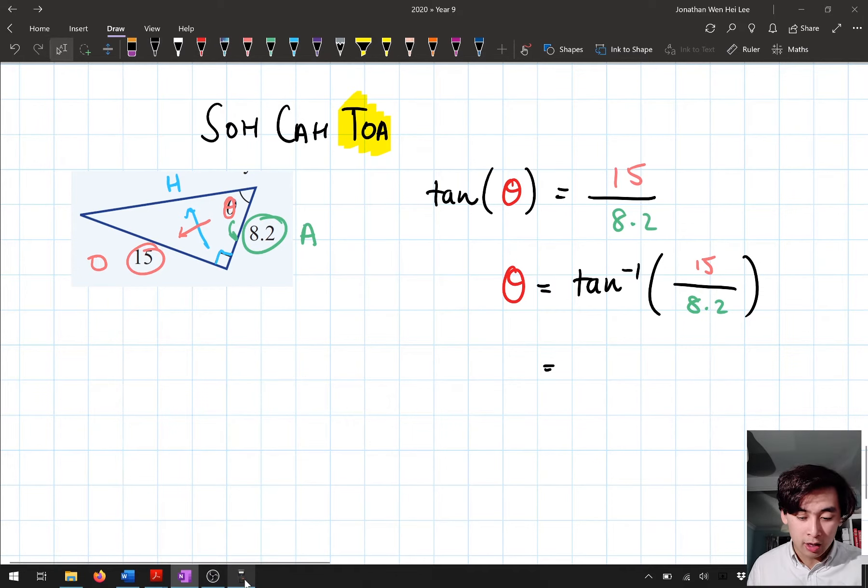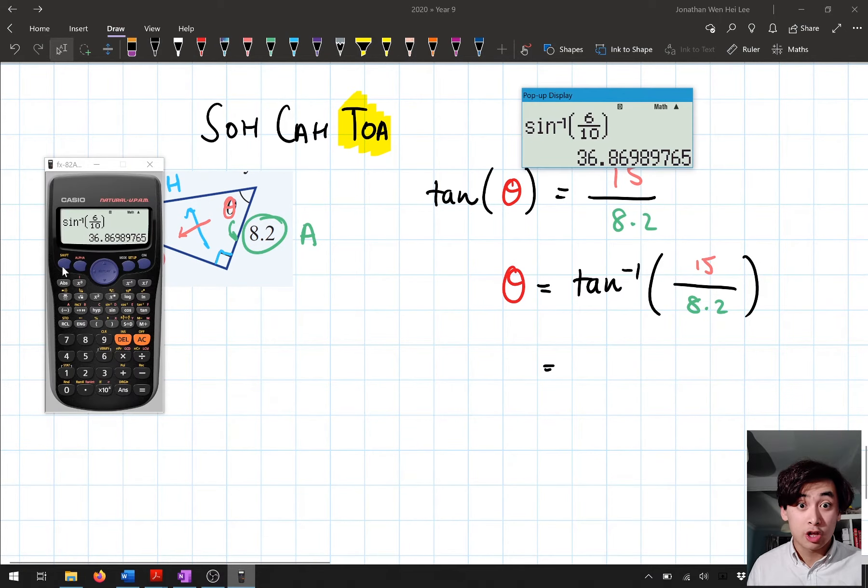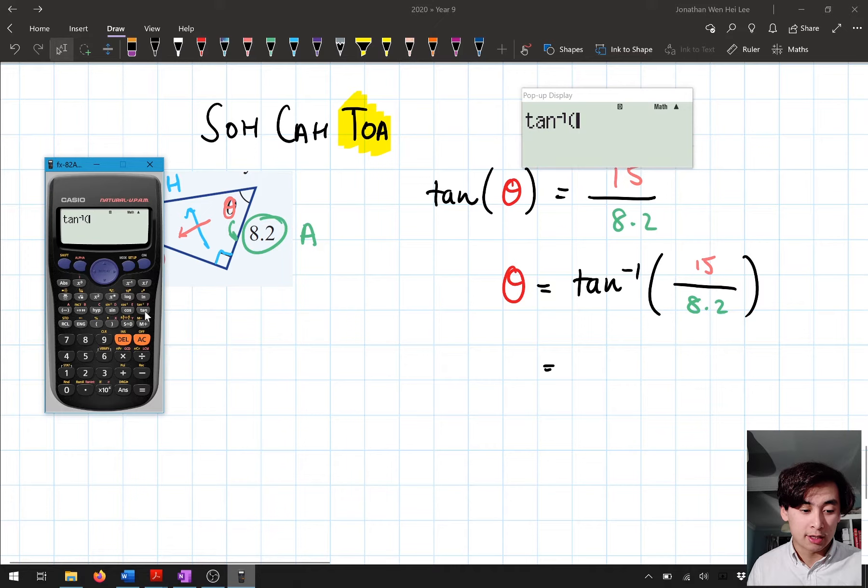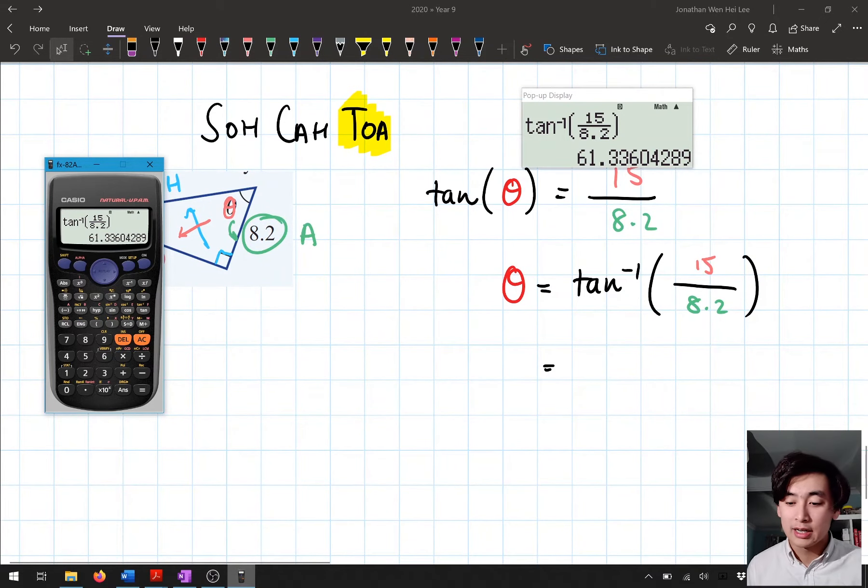That's how I find my missing angle. Let's put it into a calculator. So inverse trig, shift, tan. And I put in my fraction 15 over 8.2. I go across and I close my brackets. And so here, I want this to my nearest angles, nearest whole degree. I'm going to get 61.3. That to the nearest degree is 61 degrees.